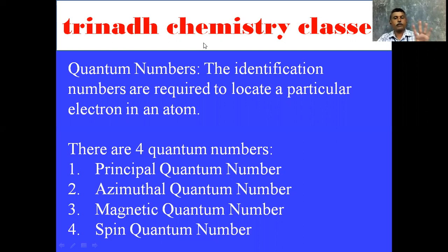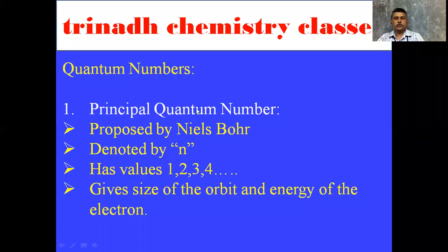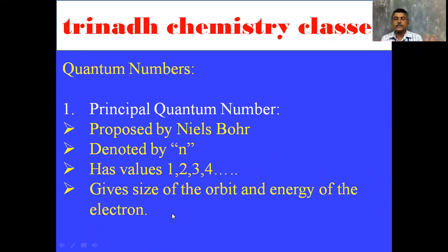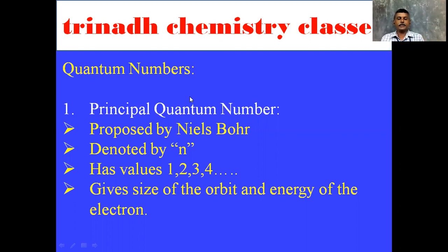The Principal Quantum Number gives the size of the orbit and energy of the electron. It is proposed by Niels Bohr and is denoted by small n. It has values 1, 2, 3, 4 and so on.